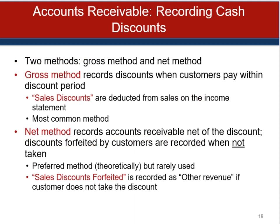Receivables should be measured at their net realizable value; using the net method would reflect this, but in general the gross method is used. If an allowance for sales discounts is used with the gross method, the net effect would result in recognizing accounts receivable at their realizable value. The gross method records sales and accounts receivable at the gross amount; sales discounts are recognized if the customer pays within the discount period and reported as a deduction from sales. The net method records sales and accounts receivable net of any cash discount; if the customer does not pay within the discount period, sales discounts forfeited is reported under other expense and income.